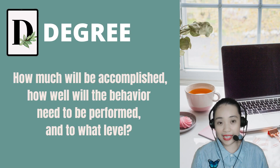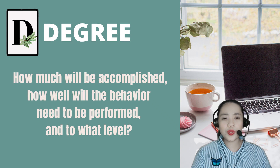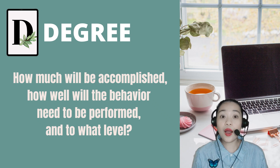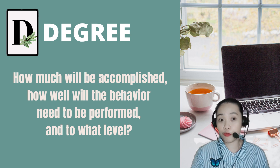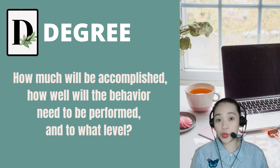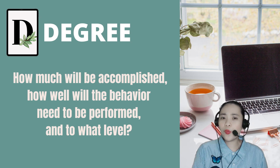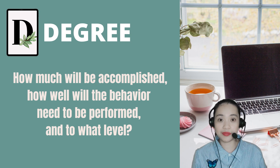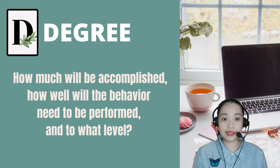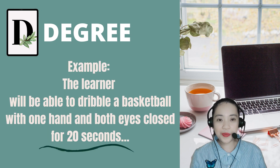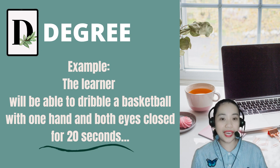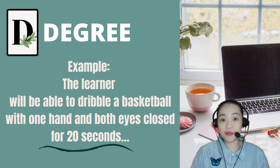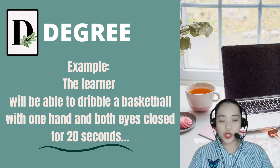The fourth element is letter D, which stands for DEGREE. It answers the questions: how much will be accomplished? How well will the behavior need to be performed and to what level? Do you want total mastery — 100% — or do you want them to respond correctly 80% of the time? A common setting is 80% of the time. Example: the learner (actor) will be able to dribble a basketball (behavior), with one hand and both eyes closed (condition), for 20 seconds (degree).